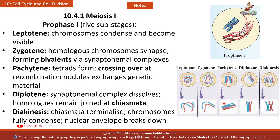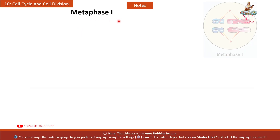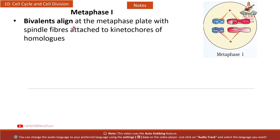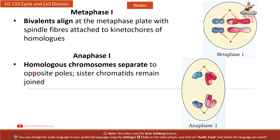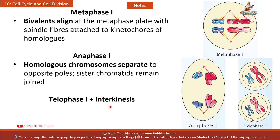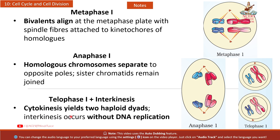Metaphase I: Bivalents align at the metaphase plate with spindle fibers attached to kinetochores of homologues. Anaphase I: Homologous chromosomes separate to opposite poles; sister chromatids remain joined. Telophase I plus interkinesis: Cytokinesis yields two haploid dyads; interkinesis occurs without DNA replication.